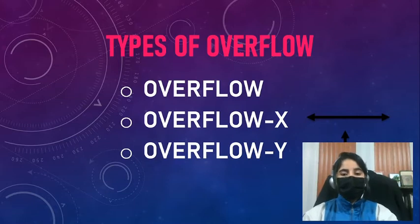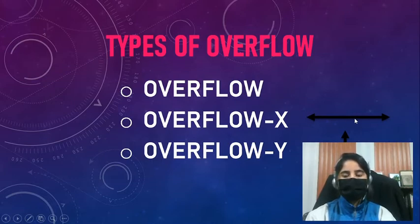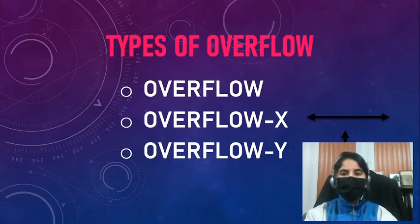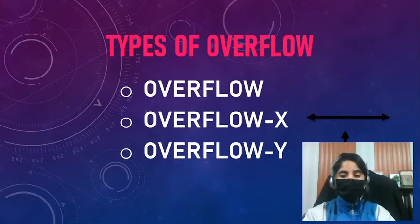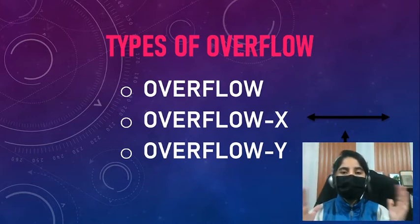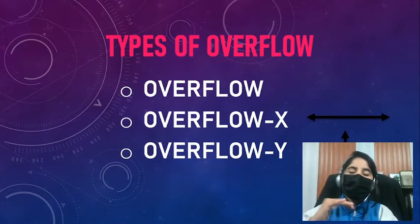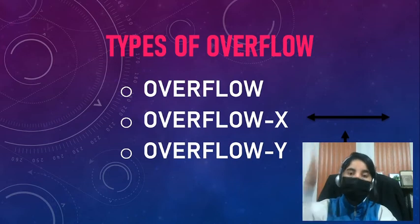We also have overflow-x and overflow-y. As I have drawn the diagram with the arrow shape here, overflow-x works on the horizontal axis — it hides or represents content horizontally. Overflow-y works on the vertical axis. For example, overflow-x will hide the horizontal scrollbar and overflow-y will hide the vertical scrollbar used to scroll the website.